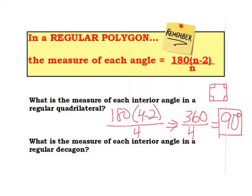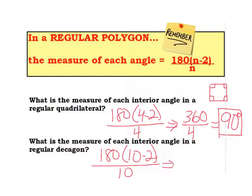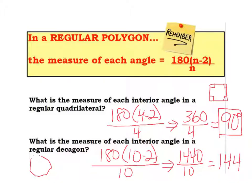Let's try one we're just going to plug into the formula: what's the measure of each interior angle in a regular decagon? First I'll find the sum: 180 times (10 minus 2) is 180 times 8, which is 1440. But that's the sum, so I have to come back and divide by how many angles there are — in a decagon, there are 10. So 1440 divided by 10 means each of those angles in that regular decagon is 144 degrees.